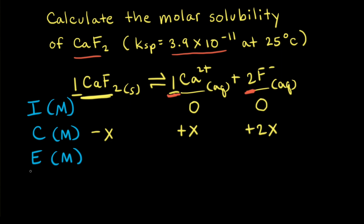So the equilibrium concentration of calcium 2+ ions is 0 plus X, or just X, and the equilibrium concentration of fluoride anions would be 0 plus 2X, or just 2X.